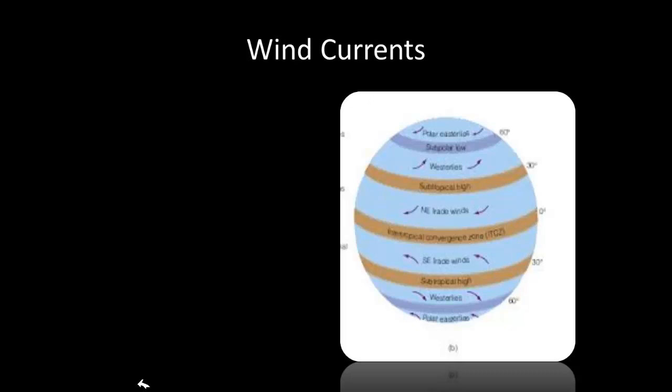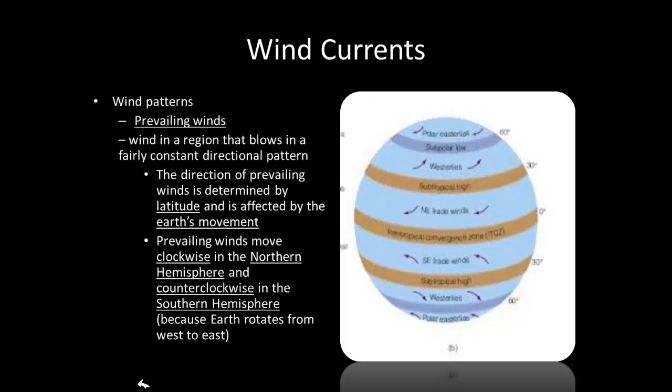The next factor affecting climate is wind currents. First, let's talk about prevailing winds. Prevailing winds are winds in a region that blow in a fairly constant or directional pattern. When we say 'prevailing,' think of something that is the majority — these winds consistently blow in one direction.